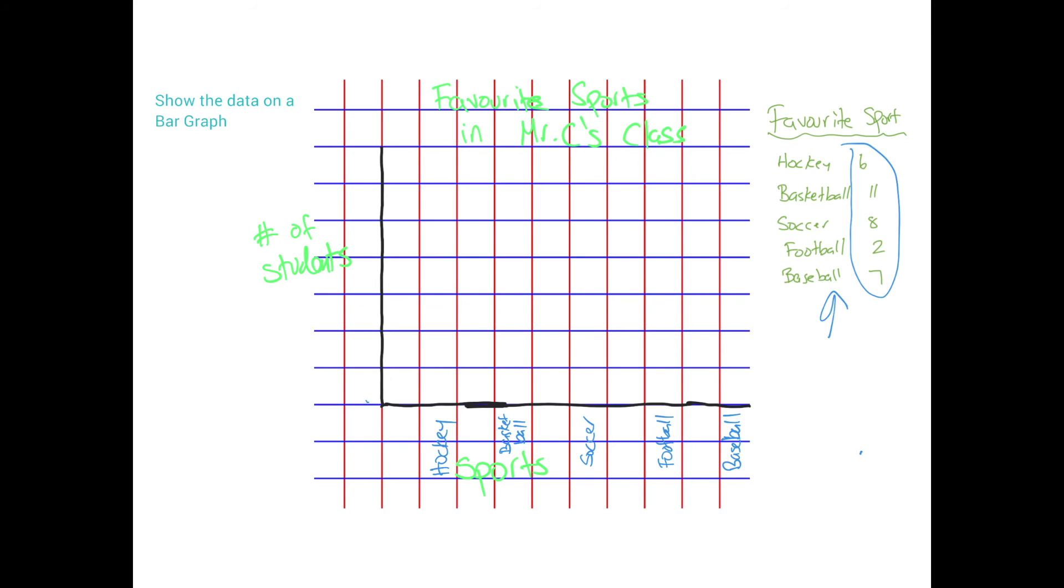So you must put the zero here. This is called the vertex of the graph. It always needs to have a zero at the bottom. So then we're going to label two, four, six, eight, 10, 12. We'll do 12.